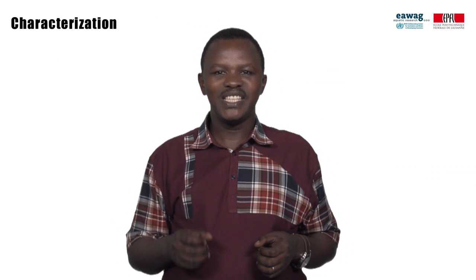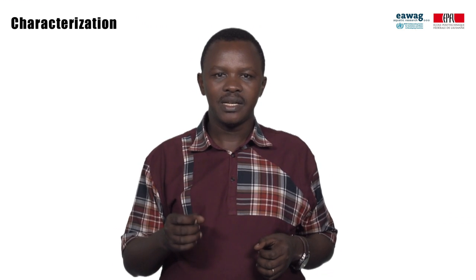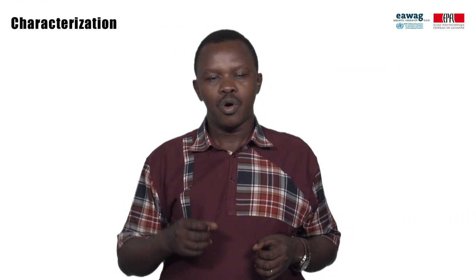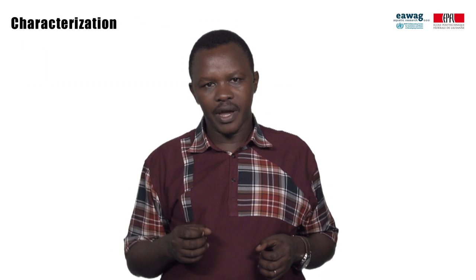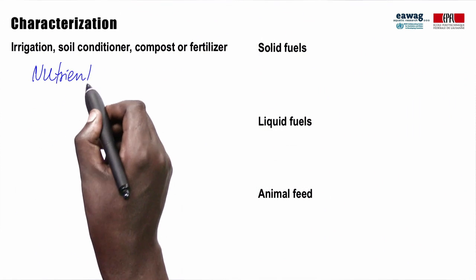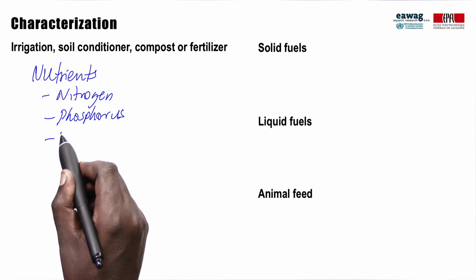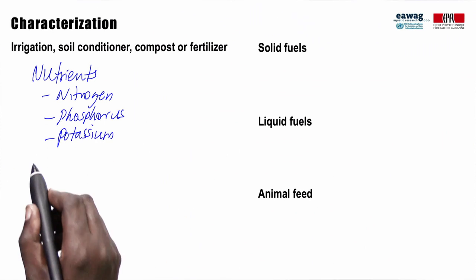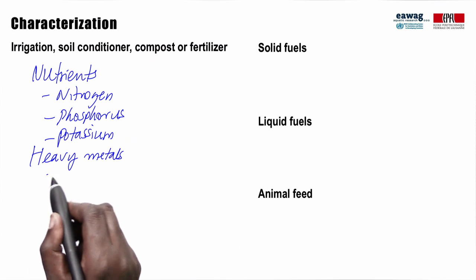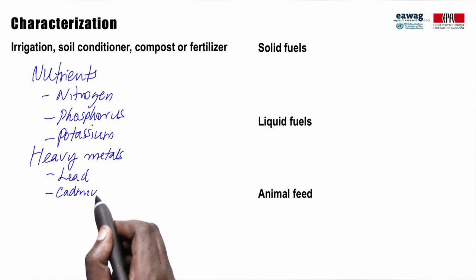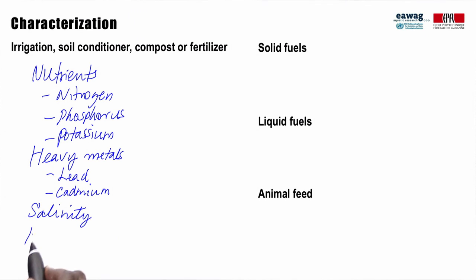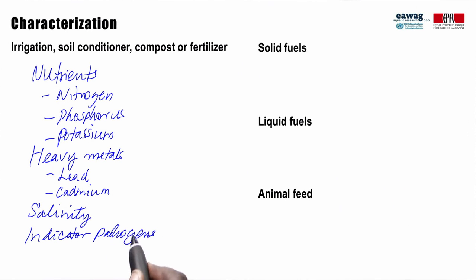Characterization of treatment products is important to ensure that they meet market needs and protect public and environmental health. On the next slide, we will summarize what parameters are relevant for the different treatment products. Nutrients such as nitrogen, phosphorus, and potassium are essential for plant growth and important for the use of effluent for irrigation and as soil conditioner, compost, or fertilizer. Heavy metals such as lead and cadmium, and salinity, are important as they can be toxic to plants. Indicators of pathogens such as E. coli for effluent and helminth eggs for soil conditioner, compost, or fertilizer should be determined to ensure that resource recovery adequately protects public health.